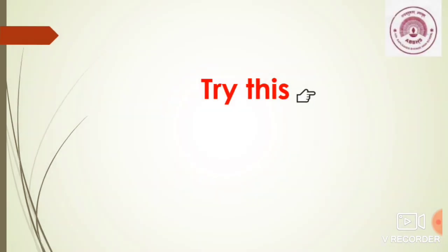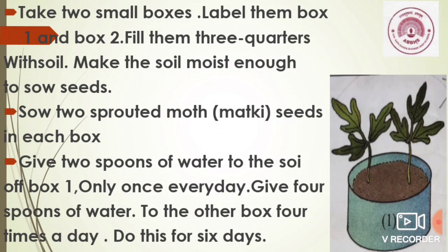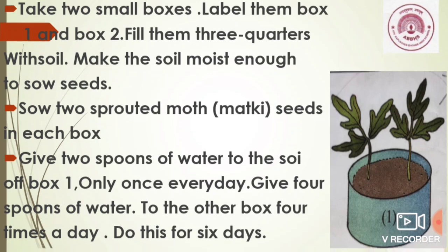Now you have to try this at your home. There is one experiment for you. Take two small boxes, label them box 1 and box 2. Fill them three-quarters with soil. Make the soil moist enough to sow seeds. Sow two sprouted moth — that is, mutki seeds — in each box. Give two spoons of water to the soil in box 1, only once every day. Give four spoons of water to the other box, four times a day. Do this for six days.